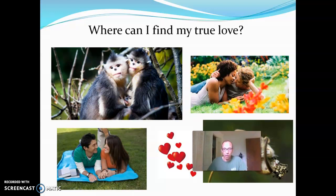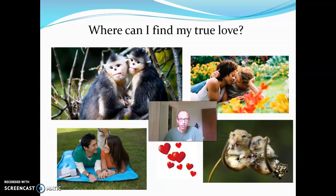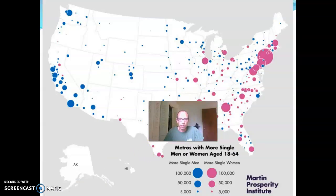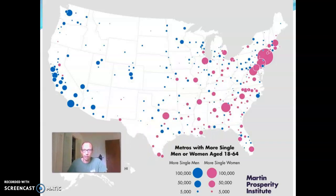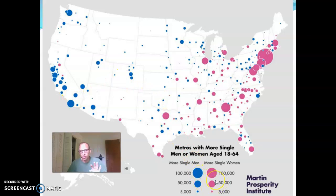Let me return to that question of finding true love and look at it again statistically. We'll look more at this later — it gets pretty interesting. Here's an example of a way you could use statistics to try to find a match for you. They use census data to plot these points. I'm going to have you pause the video and just look at this, try to figure out what's going on and what the stories are, then unpause and hear what I think.